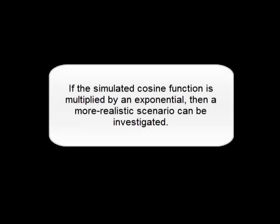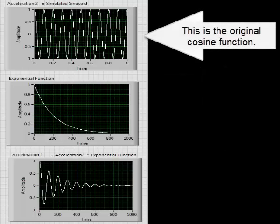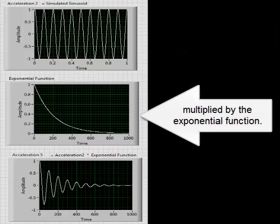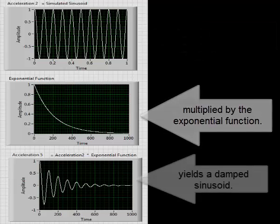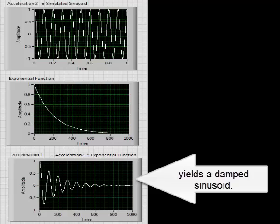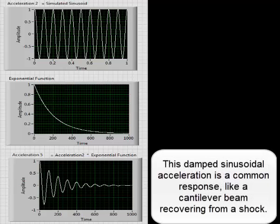If the simulated cosine function is multiplied by an exponential, then a more realistic scenario can be investigated. The cosine function multiplied by the exponential function yields a damped sinusoid. This damped sinusoidal acceleration is a common response like a cantilever beam recovering from a shock.